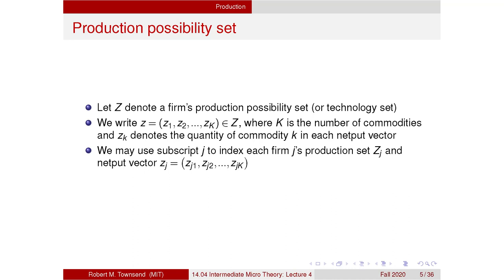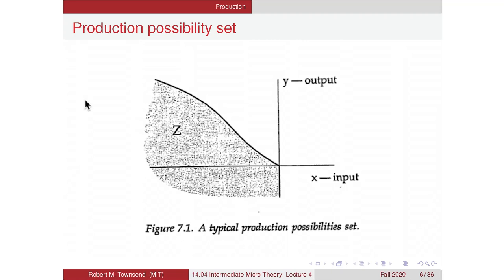More generally, z could be a production possibility set (sometimes called y). We can write z from 1 to k as this vector where k is the number of commodities. If we have firm j we can index everything by j. This is very similar to what we did for consumption. Here's a picture of a production possibility set with one input — which is negative — and the more negative it is the larger the quantity utilized. This entire speckled region illustrates the whole production possibility set.